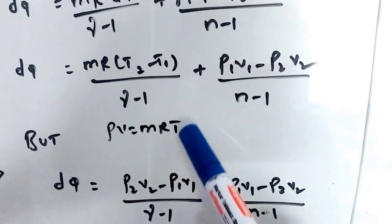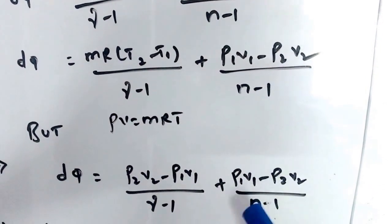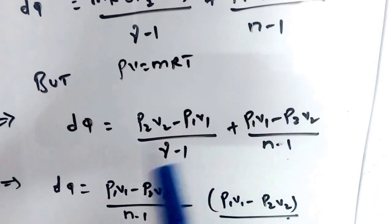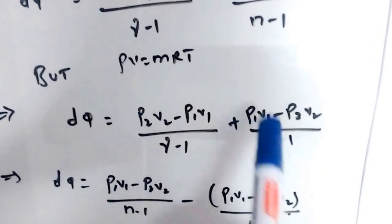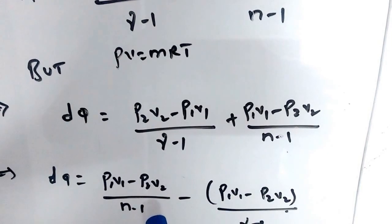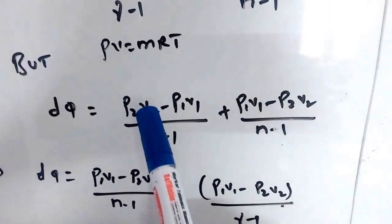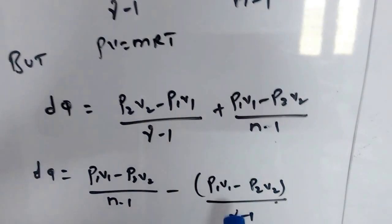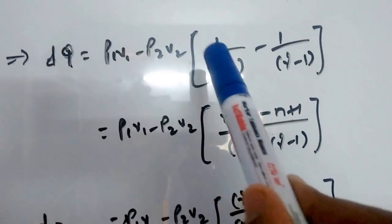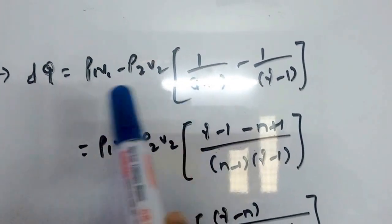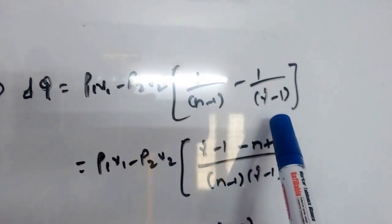Therefore we get P2V2 minus P1V1 divided by gamma minus 1, plus P1V1 minus P2V2 divided by n minus 1. Taking P1V1 minus P2V2 as common and applying a negative sign, dQ equals P1V1 minus P2V2 into 1 divided by (n minus 1) minus 1 divided by (gamma minus 1).